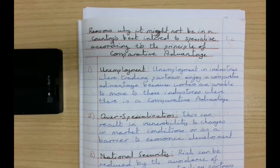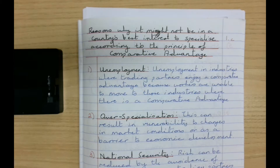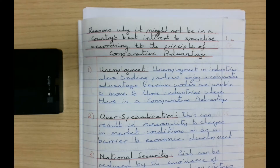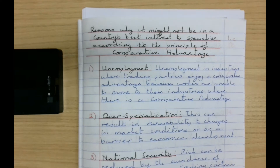For example, we have mining and software engineering. We find this country has a comparative advantage in software engineering, so according to the theory, we should specialise in software engineering and completely abandon mining. But it's not easy to go from a mining job to a software engineering job — there's a huge difference in skills, education, and abilities required. Therefore, structural unemployment would occur in the mining industry.